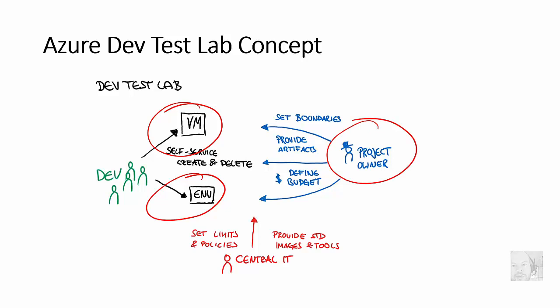You can also provide some standard artifacts that you want to see your developers using. For example, you could say you have certain software assets that shall be used by your developer team, or you have specific virtual machine templates that you would want to see them using, or specific configurations of PaaS services in Azure that you want your developer teams to use.